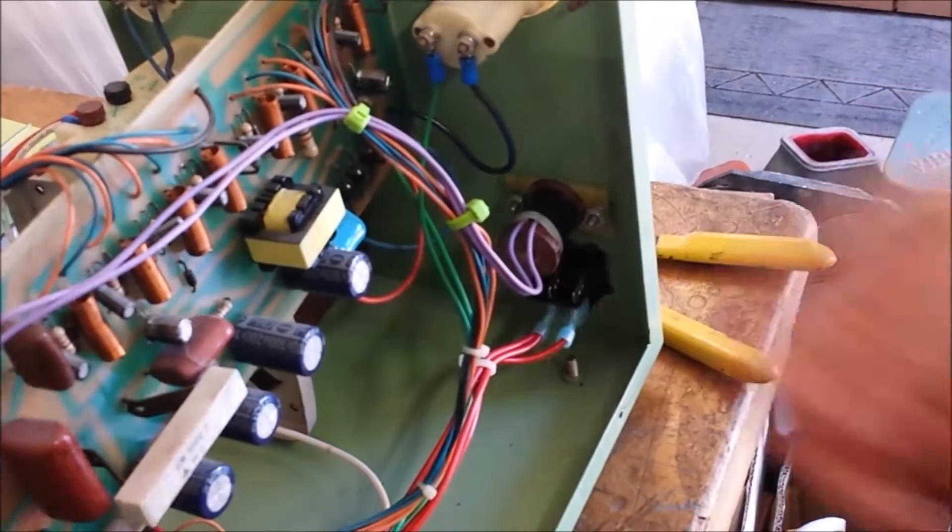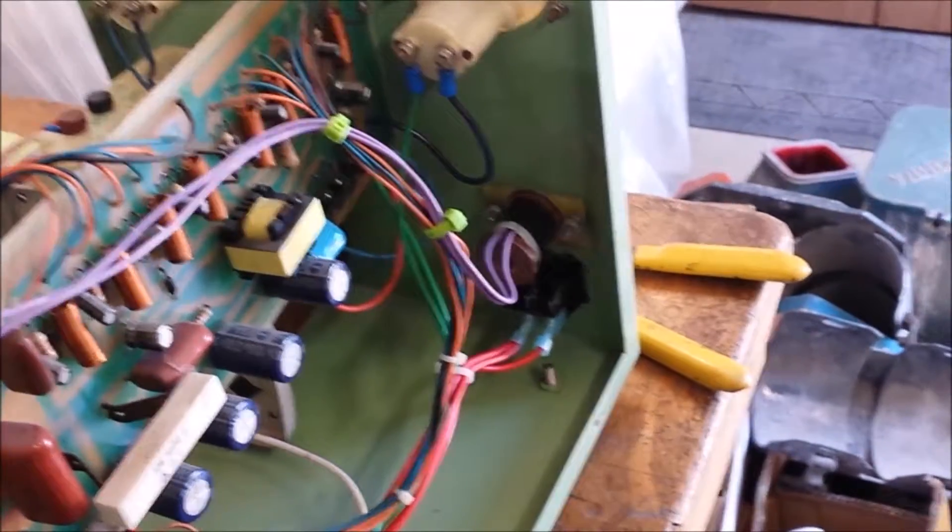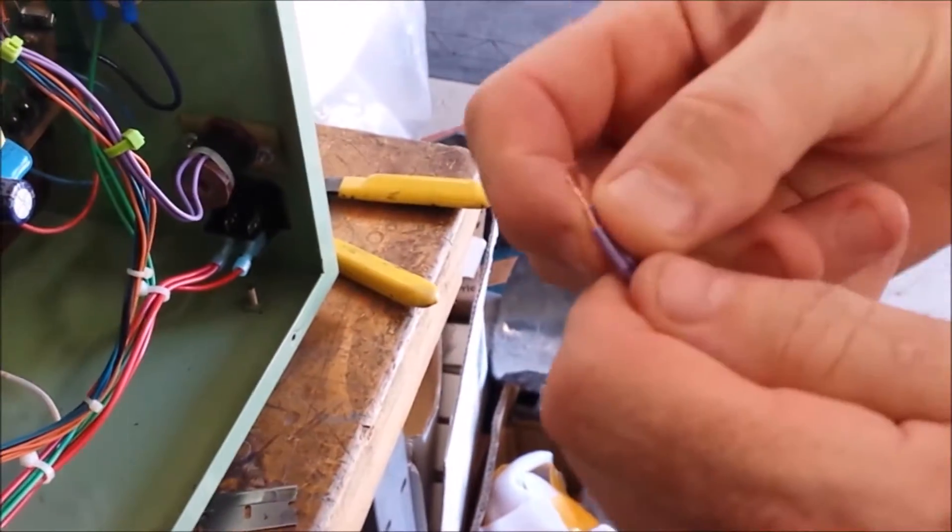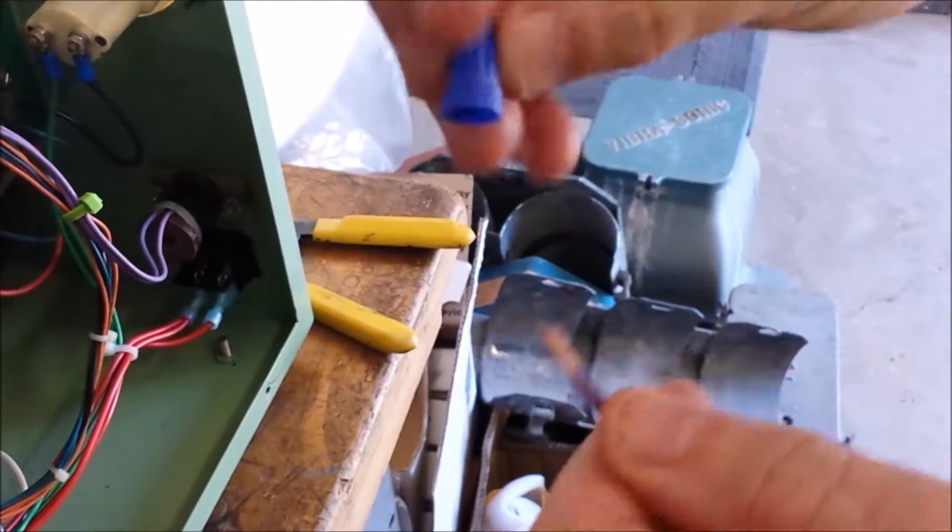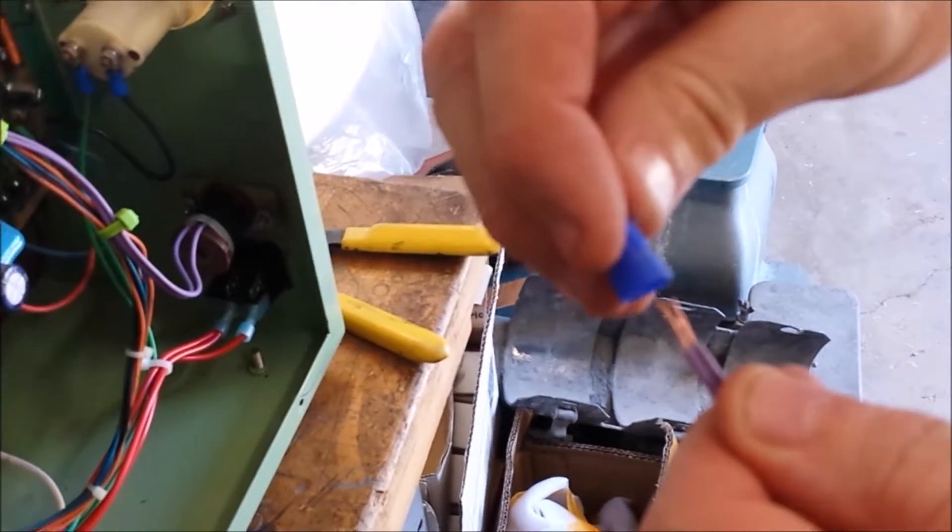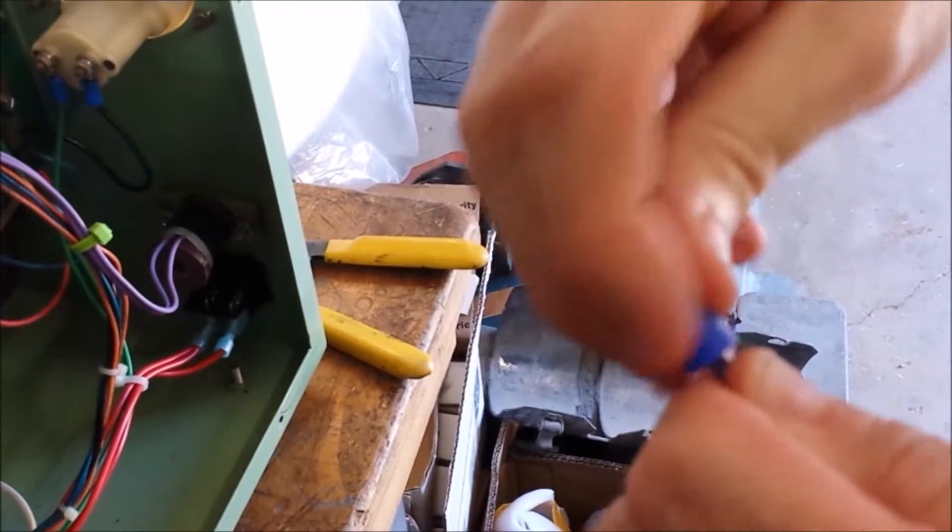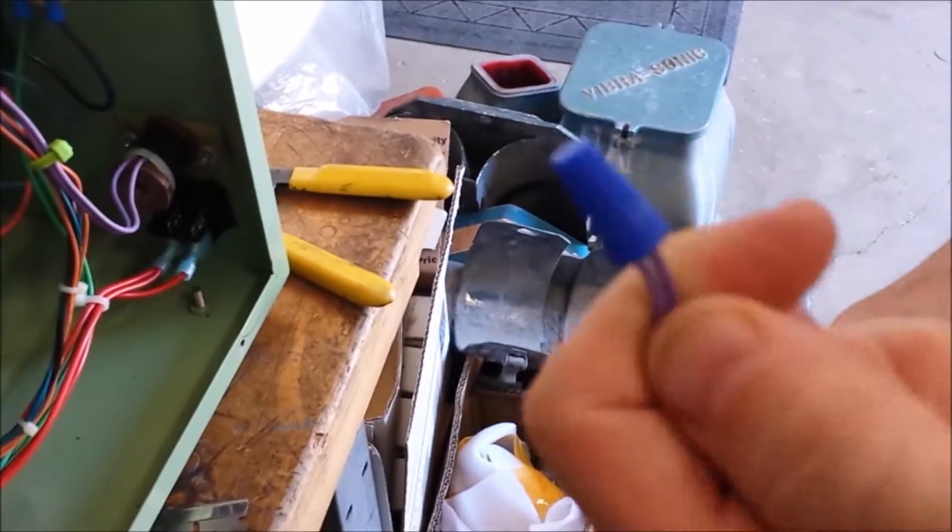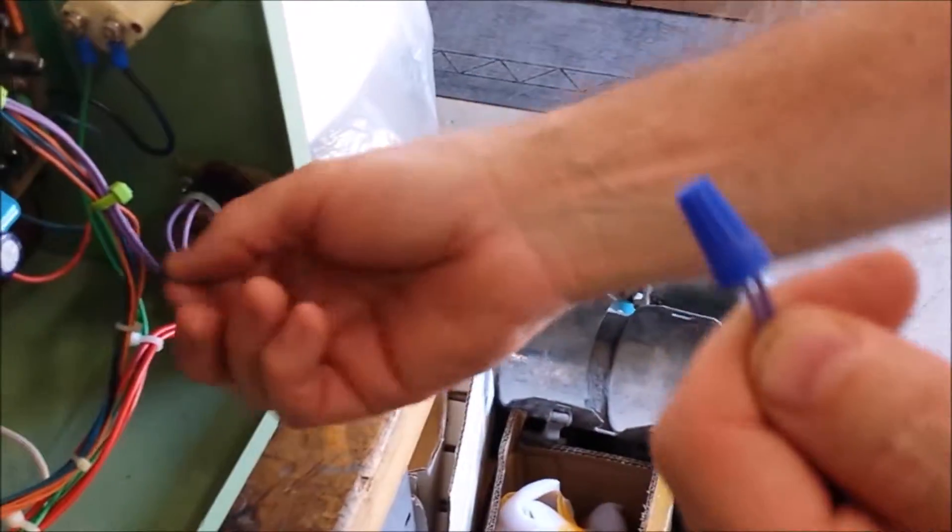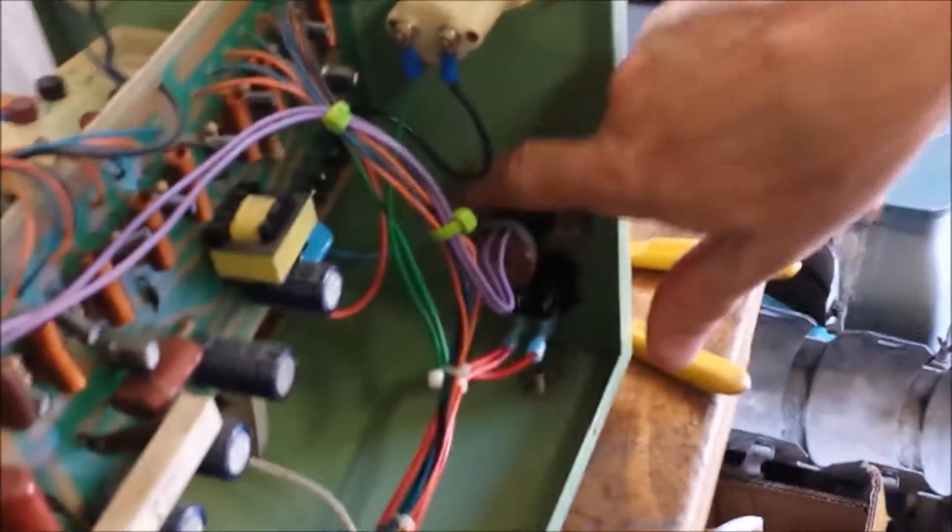When you put the two wires together, you'll use a wire nut. I'll just demonstrate it here. You'll take this little blue wire nut—you can get these at Home Depot too—and you put that on, turn it, and tighten it.